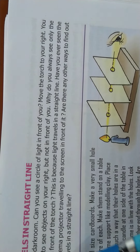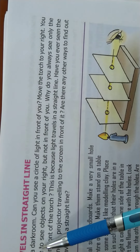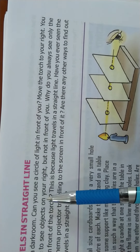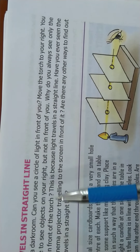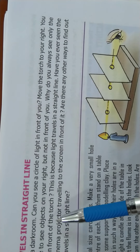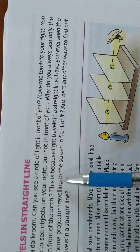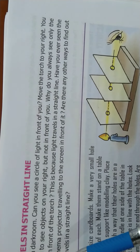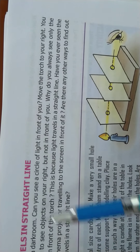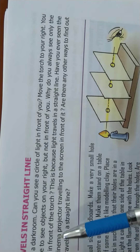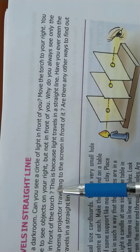Children, when you shine a torch in a dark room, you will see a circle of light in front of you. When you move your torch to your right, you will be able to see the objects on your right. When you move the torch to your left, you will be able to see the objects on your left. But you will always see only the objects in front of the torch.